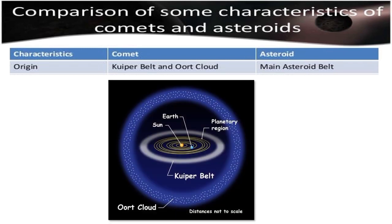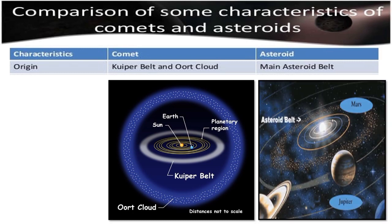In terms of origin, comets are found in Kuiper Belt and Oort Cloud. Long-period comets are found in Oort Cloud while short-period comets are found in Kuiper Belt. Asteroids are found in Main Asteroid Belt. Main Asteroid Belt is located roughly between the orbits of the planets Jupiter and Mars.